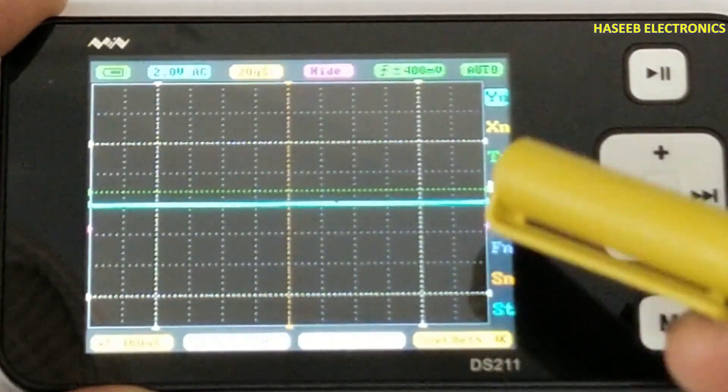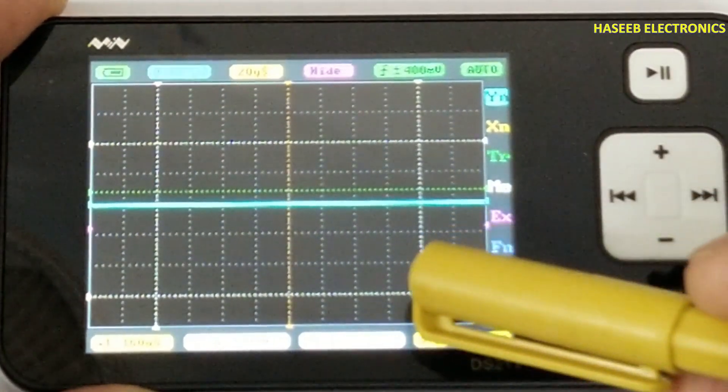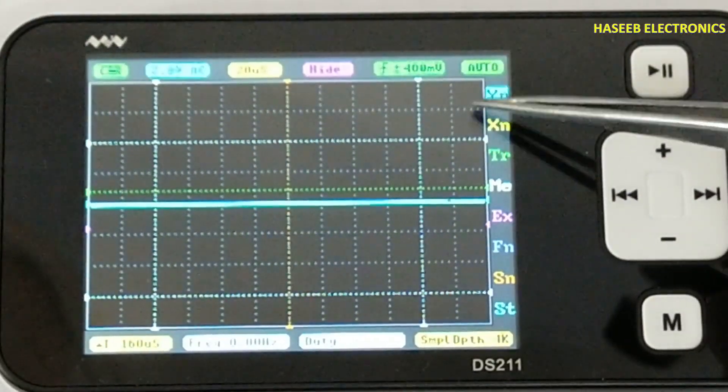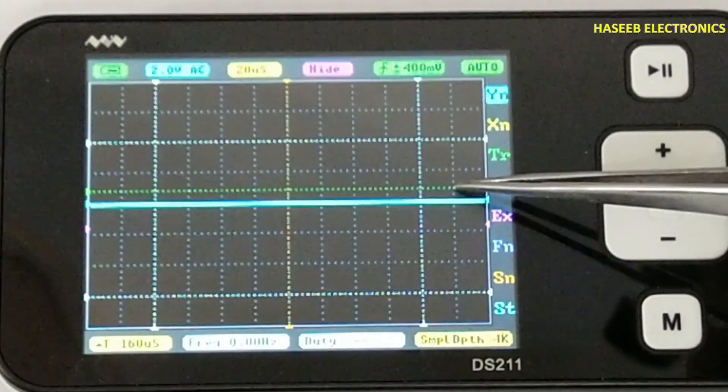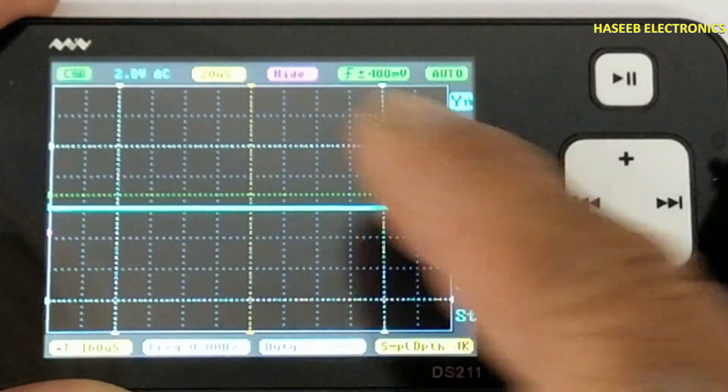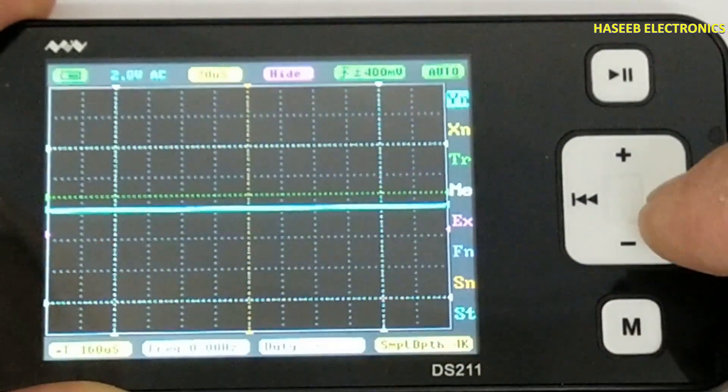And count the number of grids in vertical direction, in y-axis. Here I have one, two, three, four, five, six, seven, eight. And check the maximum voltage value.